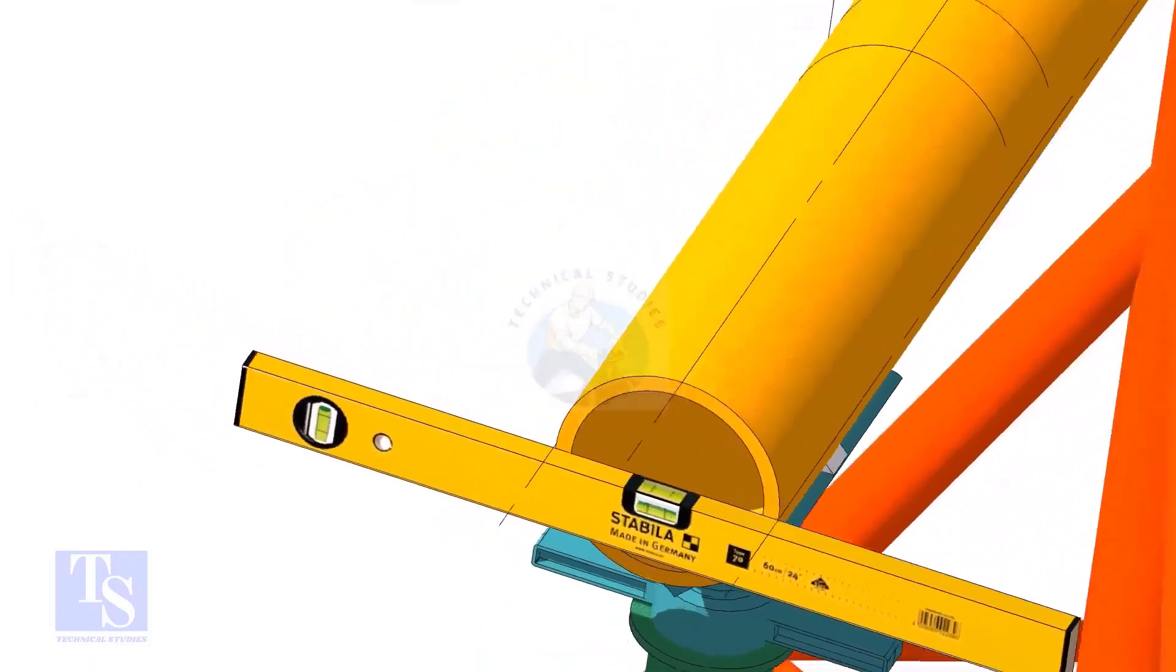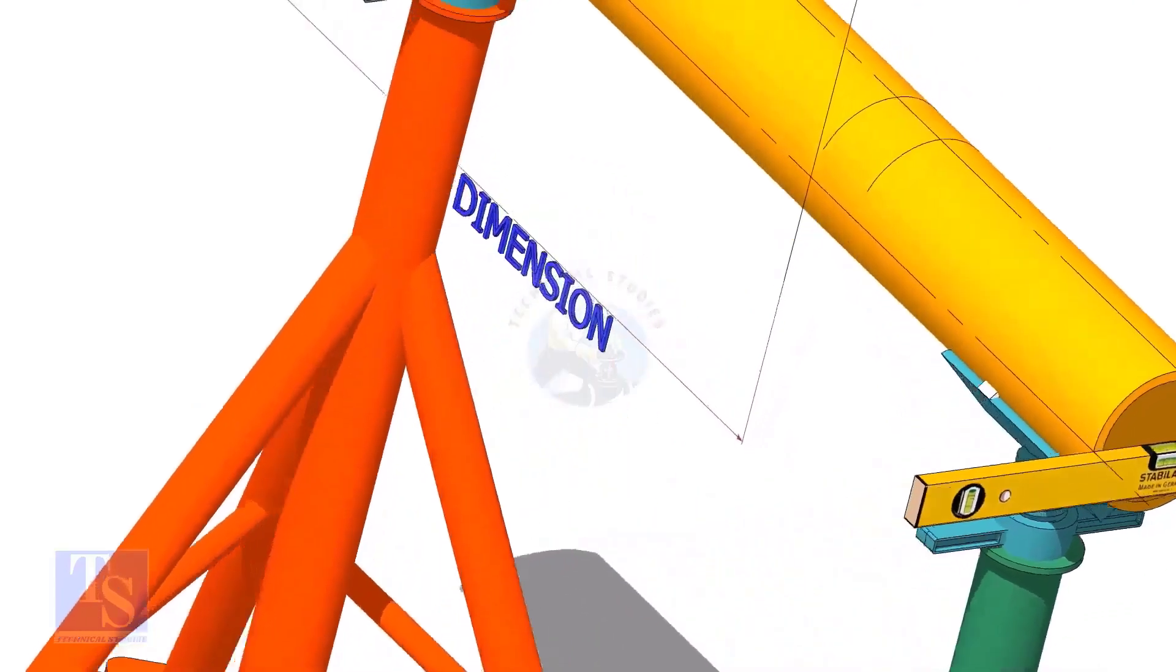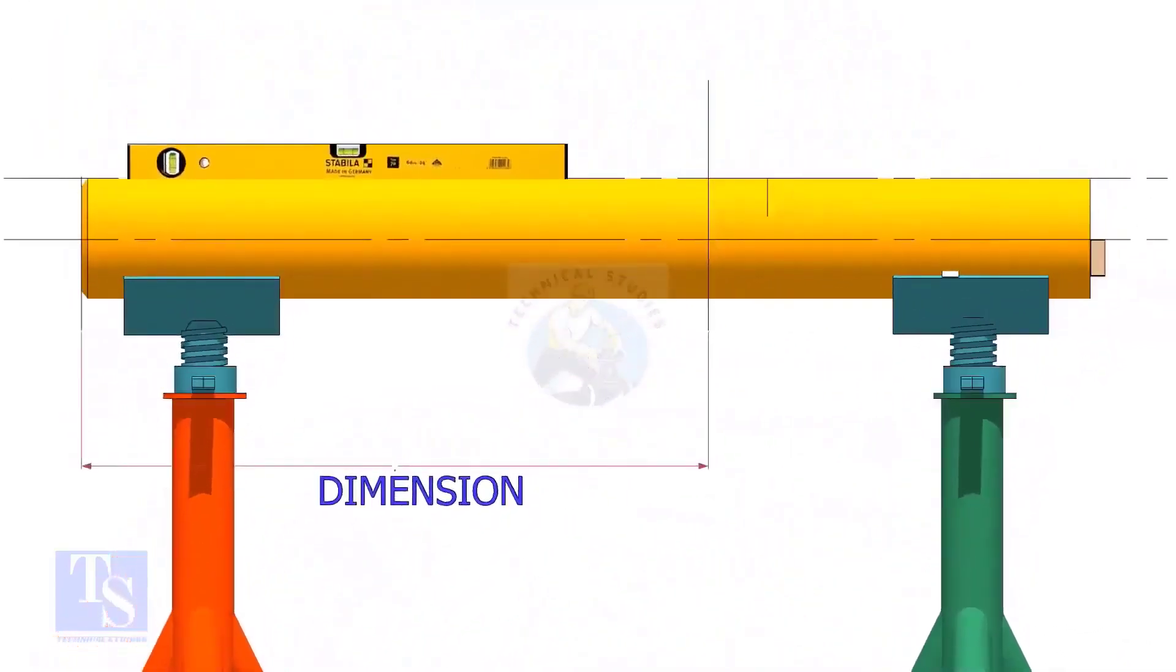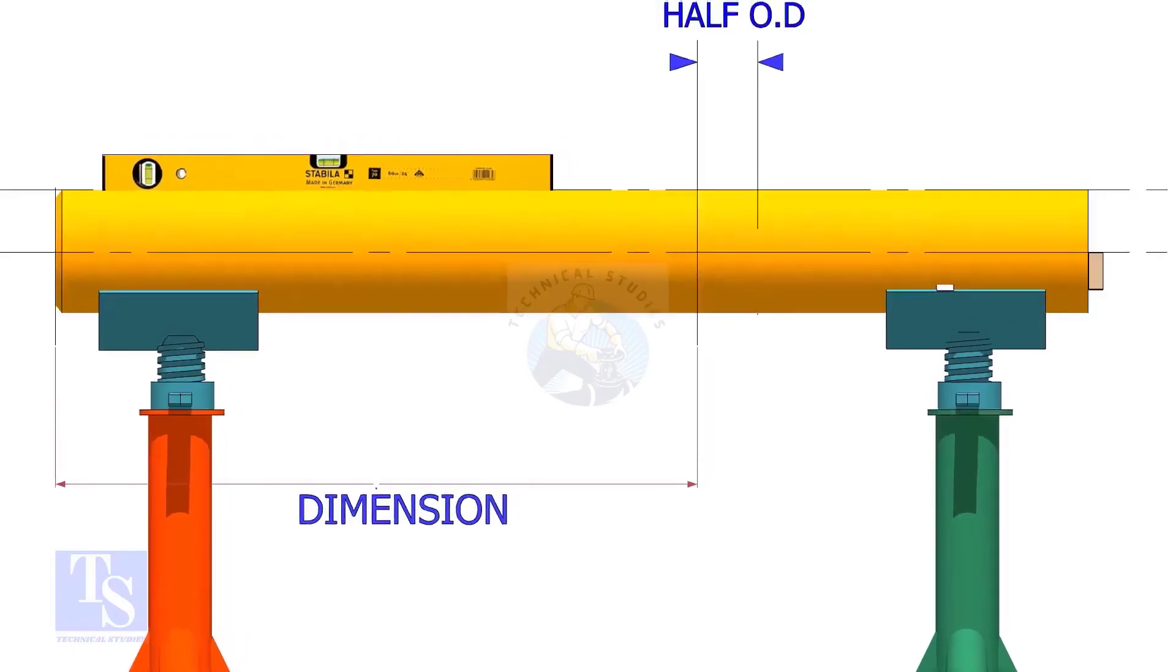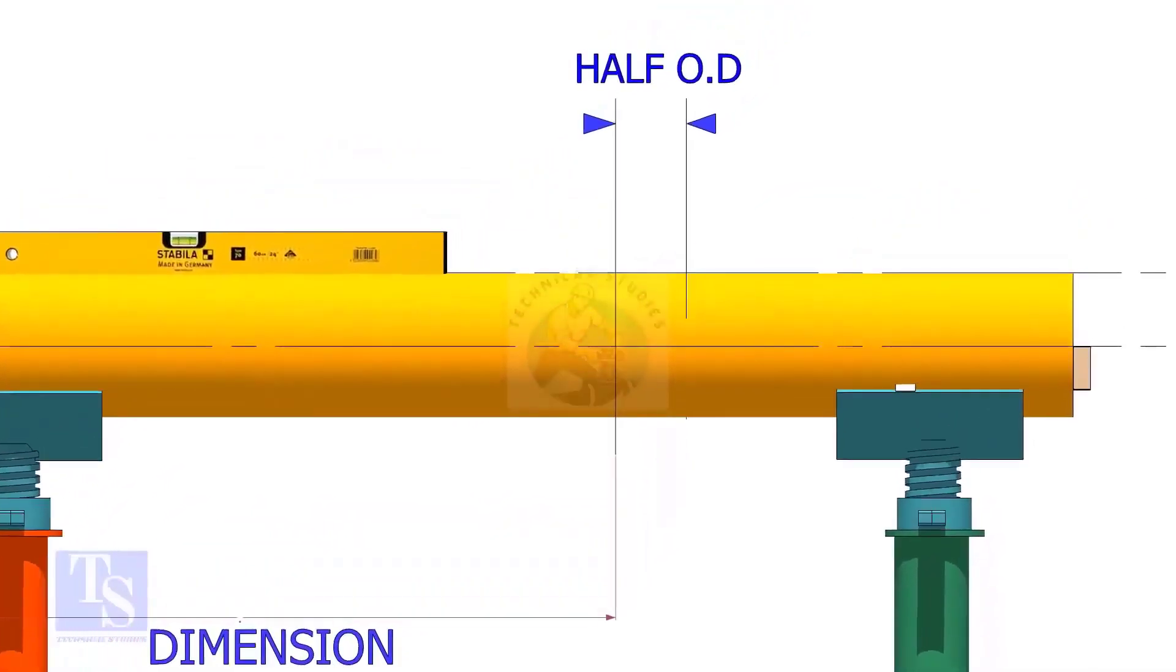Mark the center of the lateralet, as per the drawing. Mark half OD of the header in the direction of the lateralet on the top of the pipe. This line is actually for inspection purposes only.